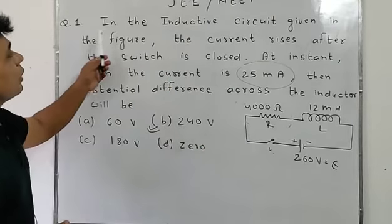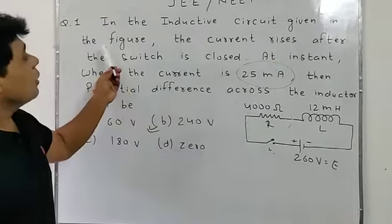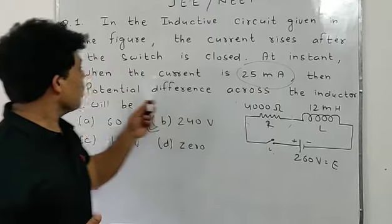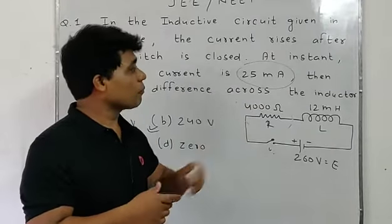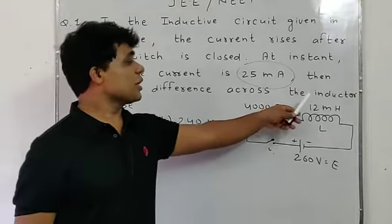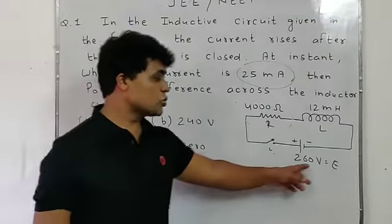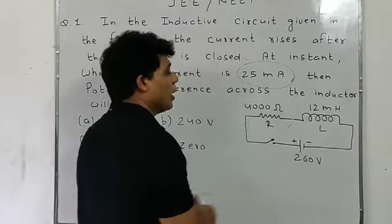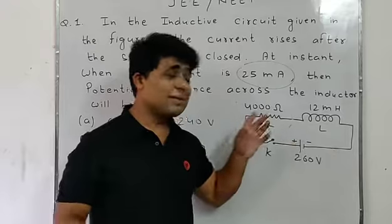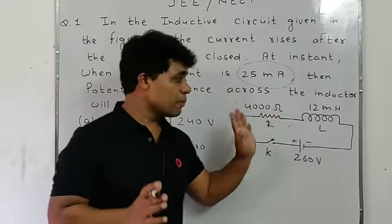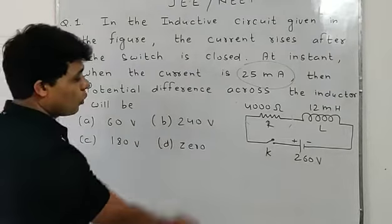In the inductive circuit shown in the figure, the current rises after the switch is closed. We have a resistance and an inductor. A 260 volt battery is given. We need to find the potential difference across the inductor L.